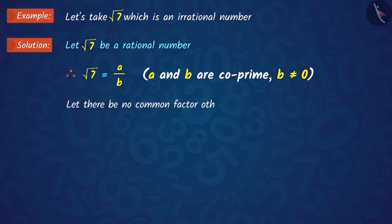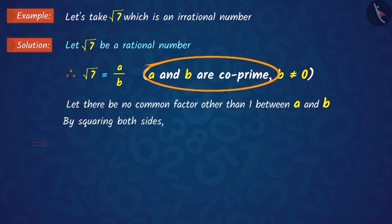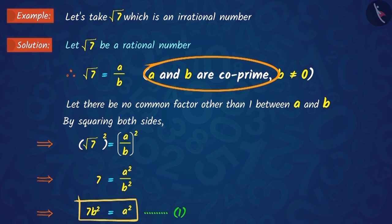Suppose a and b do not have any common factor other than 1, where a and b are co-prime. By squaring both sides and rearranging, we get 7b² equals a².